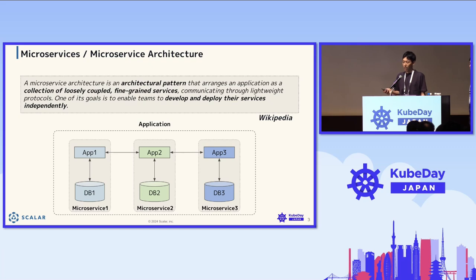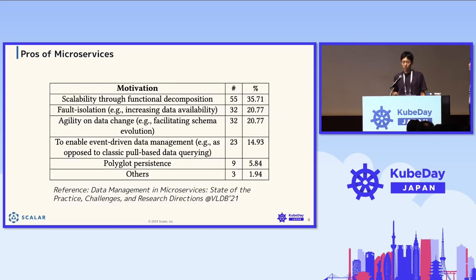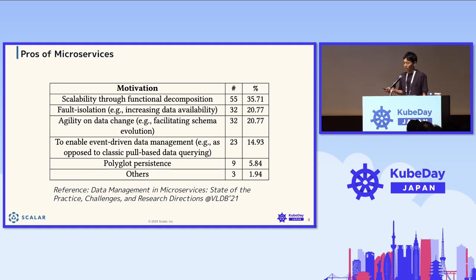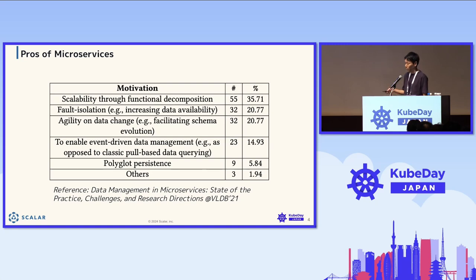Let's look at the benefits of microservices. I took this from a paper from the VLDB conference, which is one of the top-tier conferences in database and data management systems. It's ranked based on a survey. The first benefit is scalability through functional decomposition — the capability to scale a system by decomposing it into microservices by function.